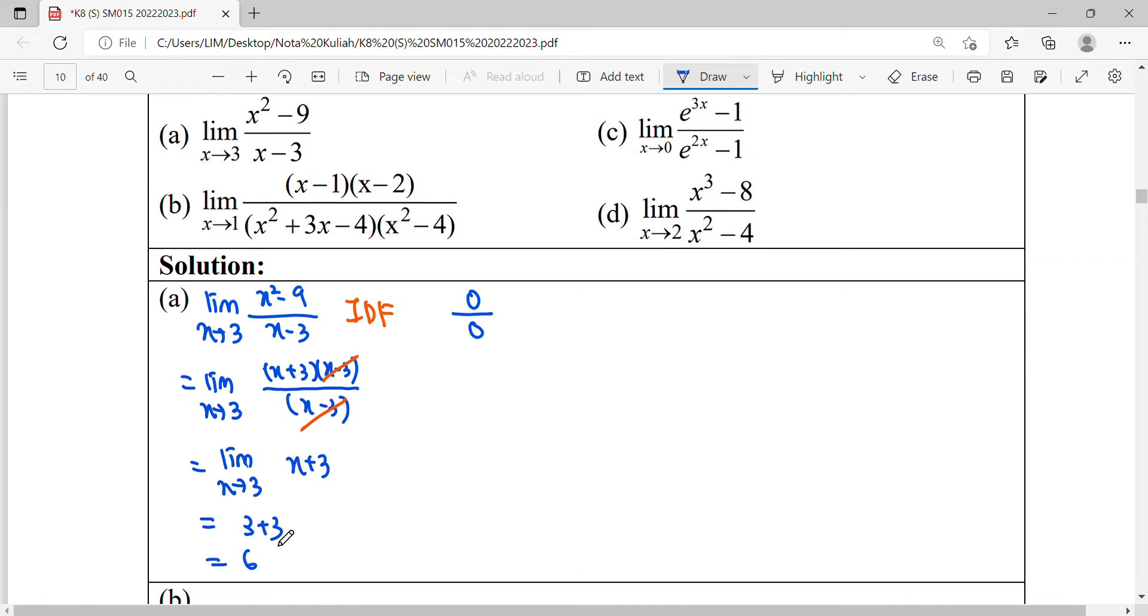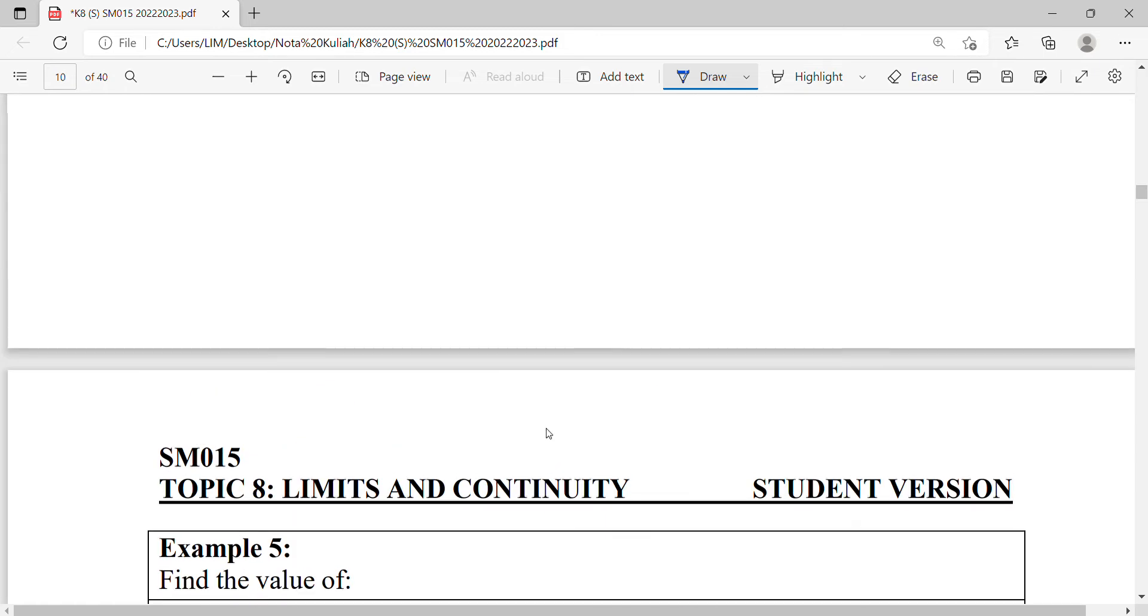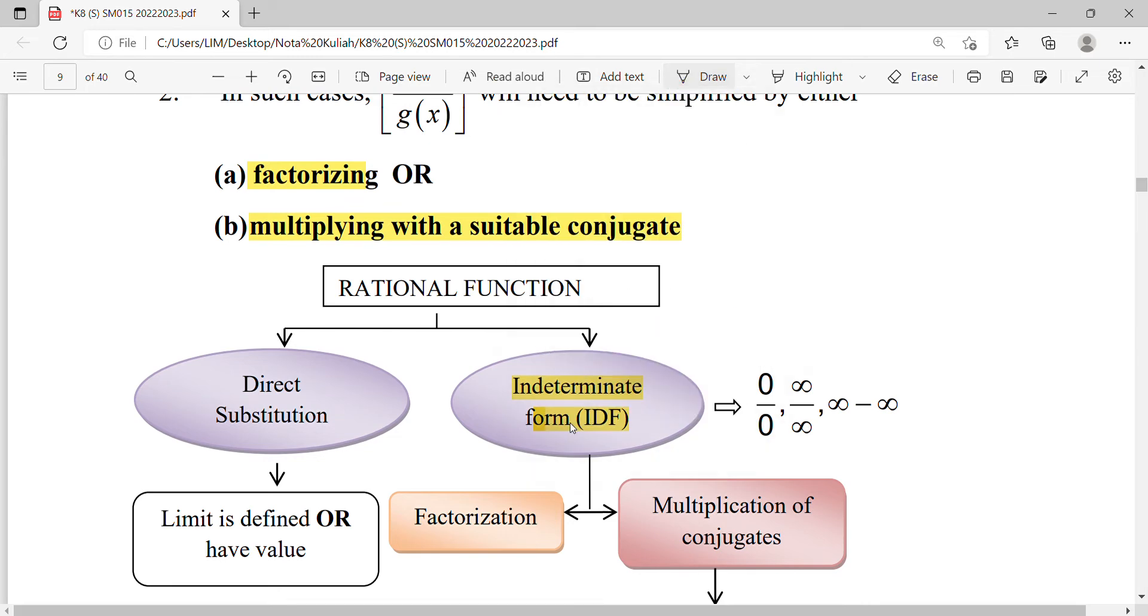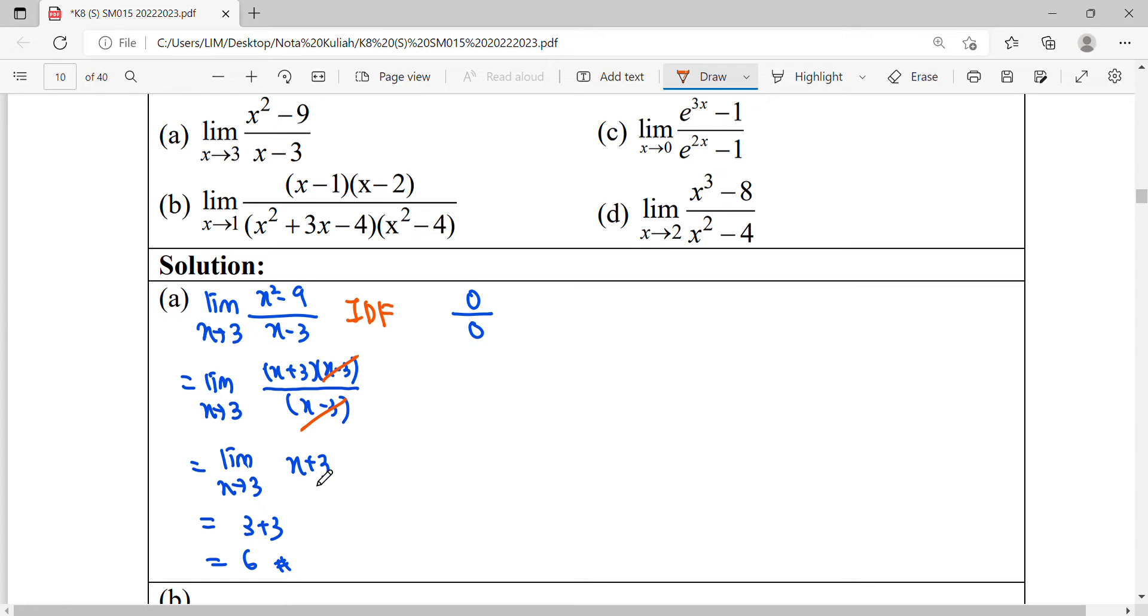So when we substitute the value, the notation of the limits, we know it will write again. So for the notes here, when we find the function that gives us 0 over 0, in determinate form, the function needs to be simplified. Then the simplified function will allow us to calculate the limit.